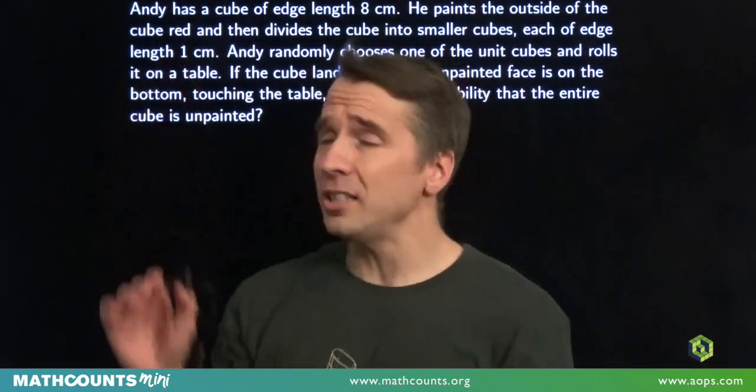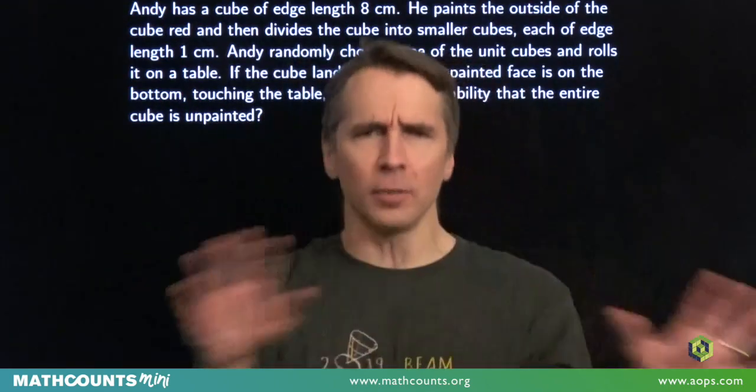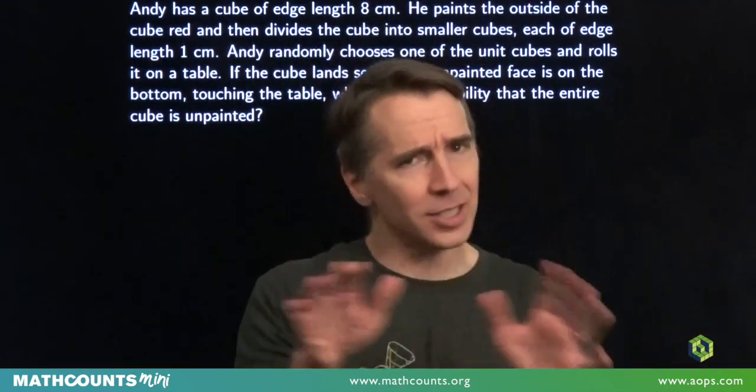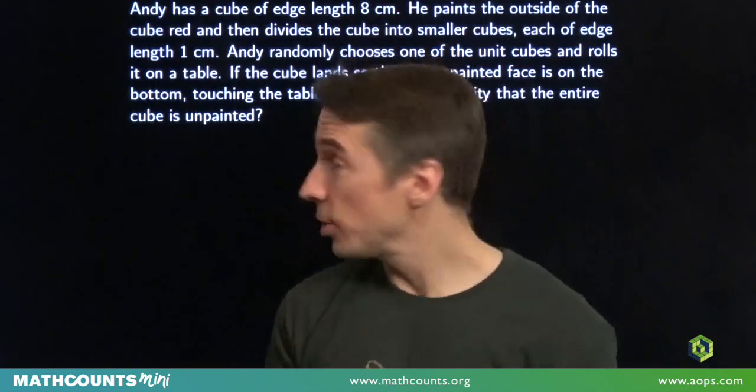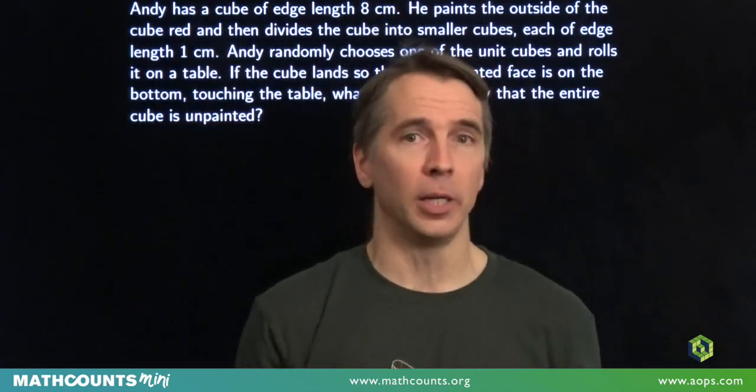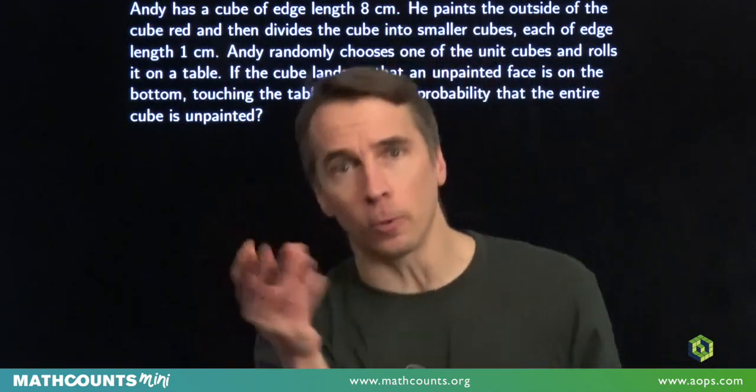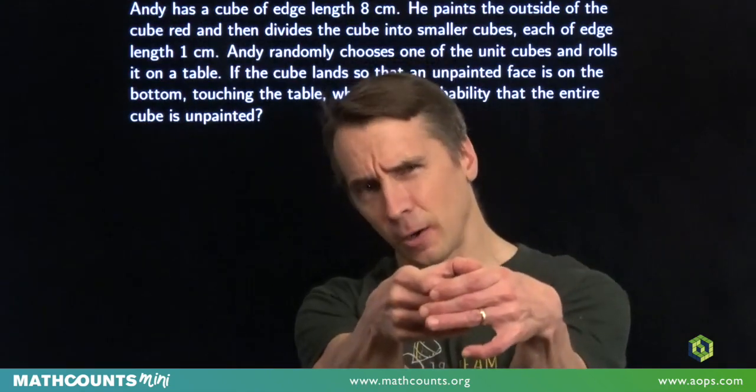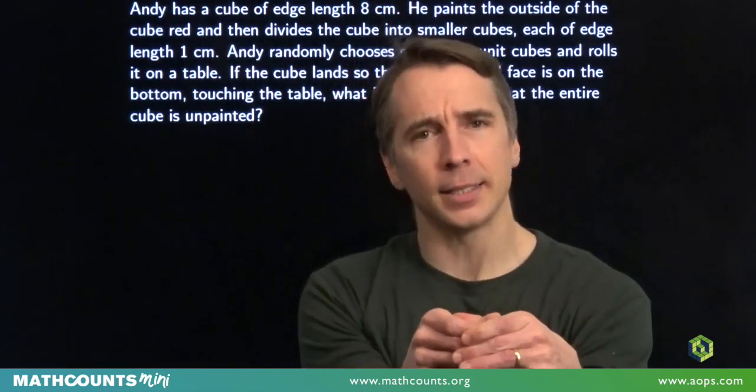In this problem, Andy starts off with an 8 centimeter cube, paints all its faces completely red, and then he slices that cube up into a bunch of little unit cubes. Each of those little cubes has side length 1 centimeter. Then he grabs one of these little unit cubes at random and he rolls it, and he finds out that the face that's sitting there on the table of the cube that he rolled is unpainted.